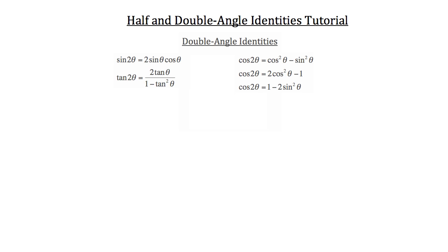Now let's look at the double angle identities. There are five available for you to use. Remember, you'll want to eventually memorize these identities, but for now keep them with you while working through these problems. Let's begin by looking at a problem using double angle identities.